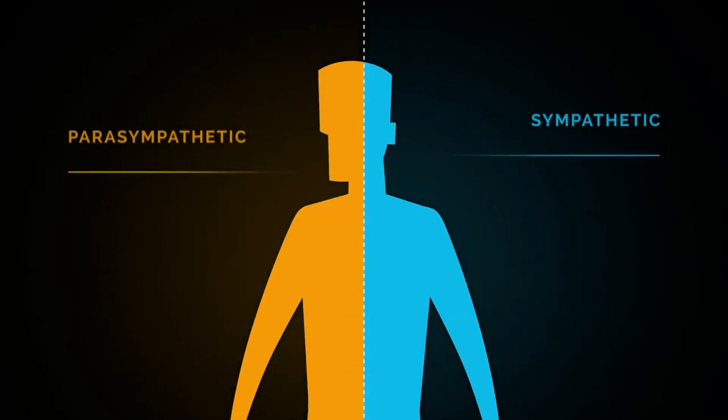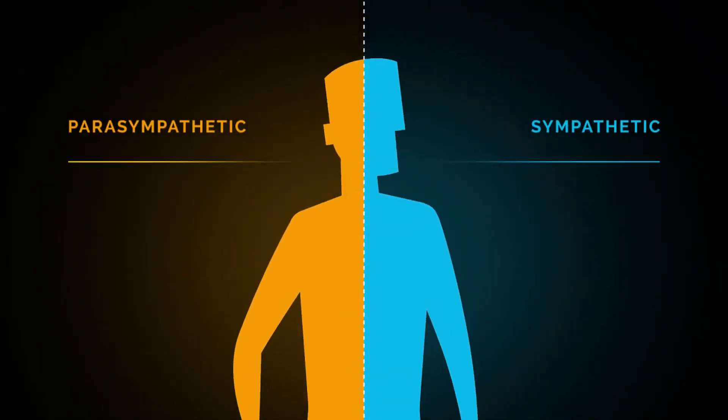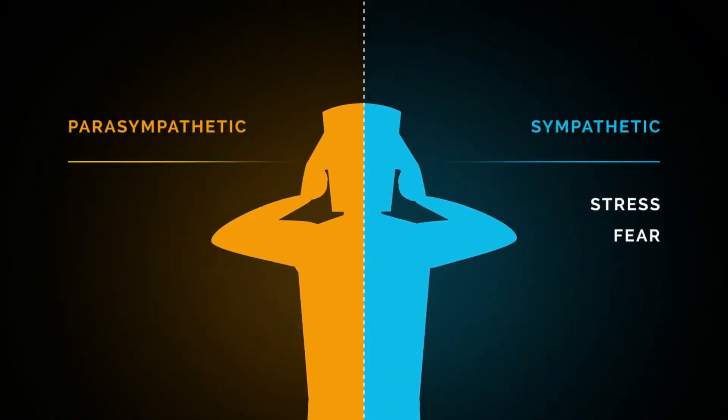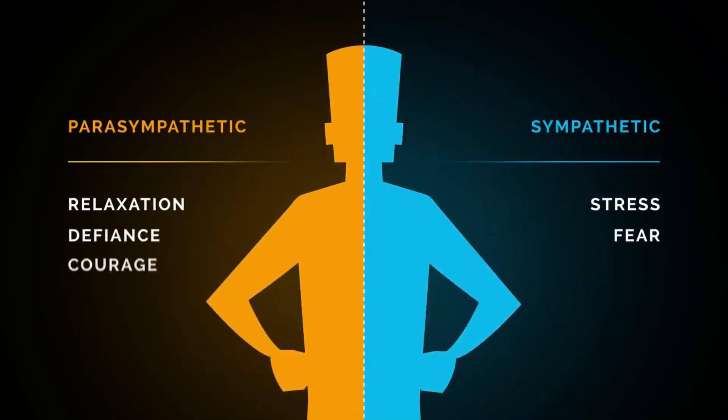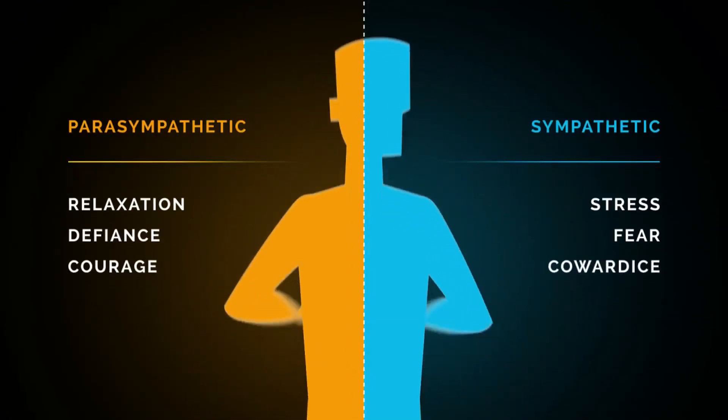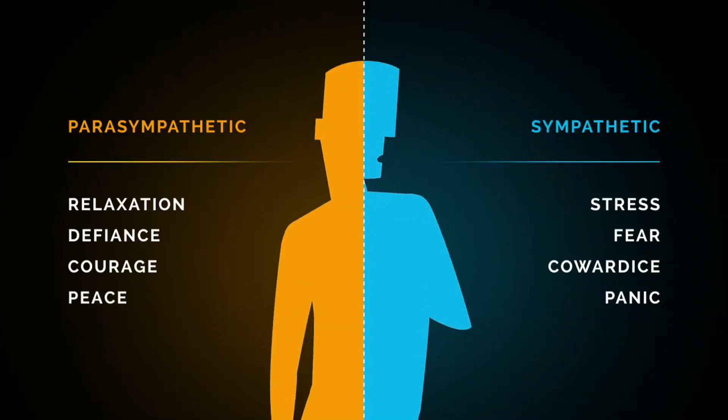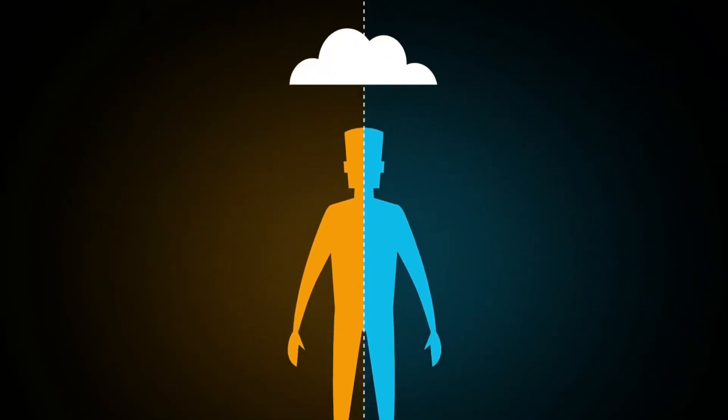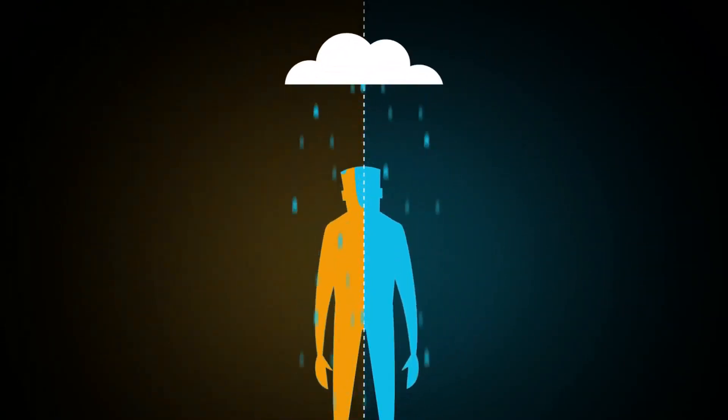Together, they make up how our body experiences stress and fear, relaxation and defiance, courage and cowardice, panic and peace. When we are faced with chronic forms of stress, the sympathetic nervous system is continuously activated and doesn't get a chance to rest. In this instance, we develop something called chronic sympathetic overdrive.